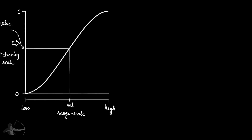As we said, using the smoothstep function we bring a value in between 0 and 1 based on a provided range. That means the smoothstep function takes at least three parameters: first, the lower range value; second, the high value of the range — using these two parameters we define the range; and third, the value that we want to squeeze in between 0 and 1 based on this range.